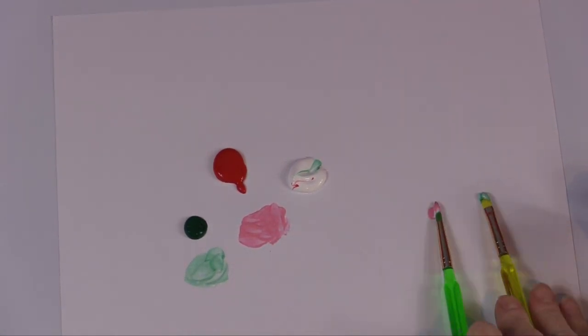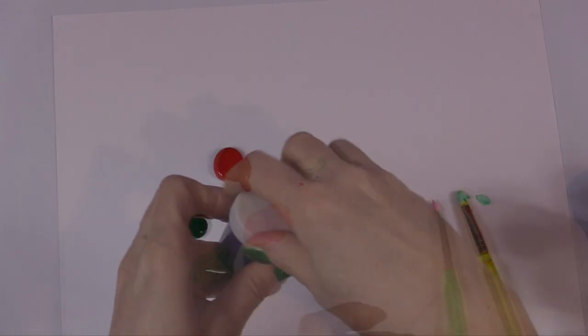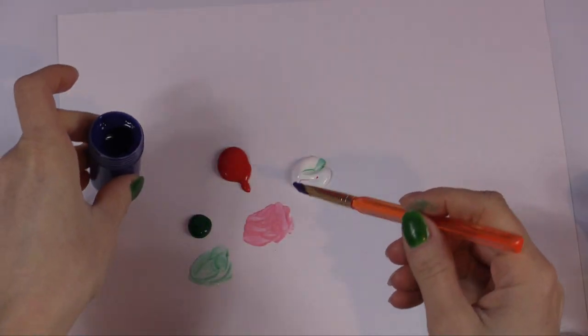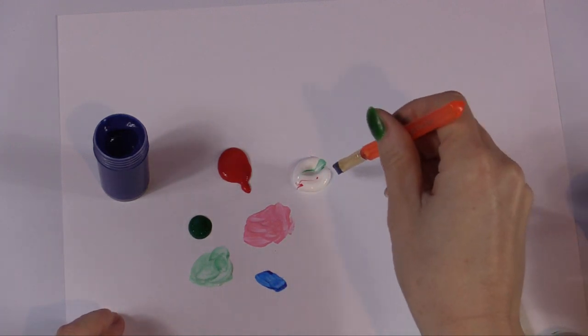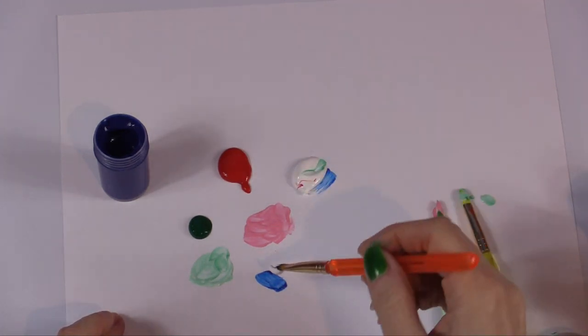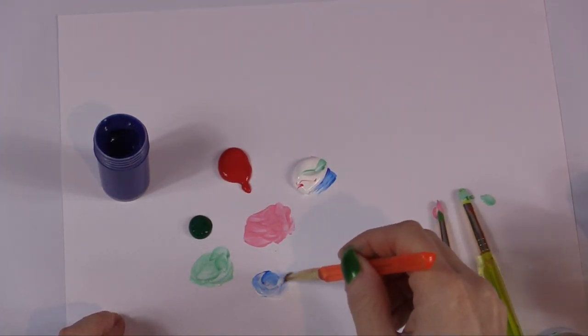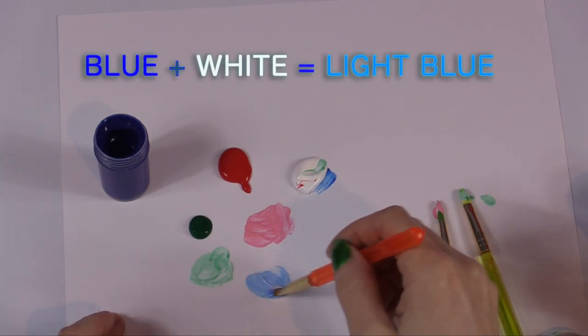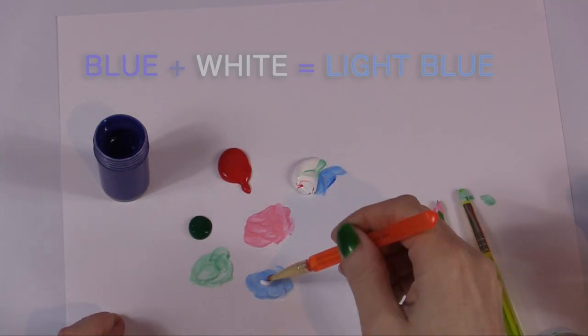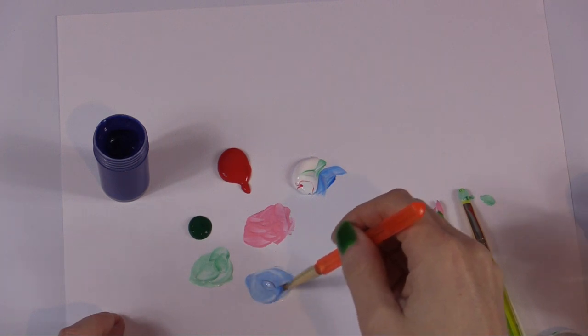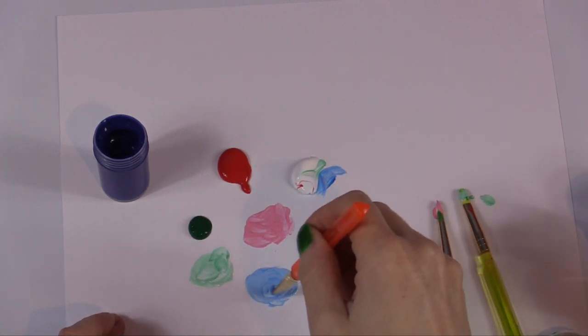And next let's try the last color we'll do. Let's scoop out some blue. Put some blue down there. We'll scoop a little white. Let's make a blue. Oh, look at that. We made a really pretty light blue. So those are the pastel colors.